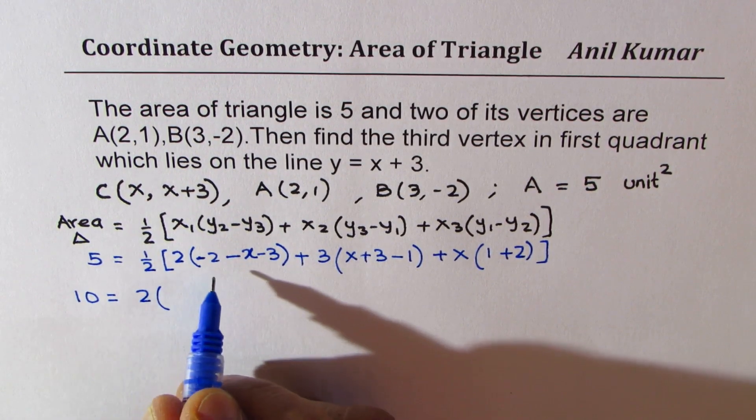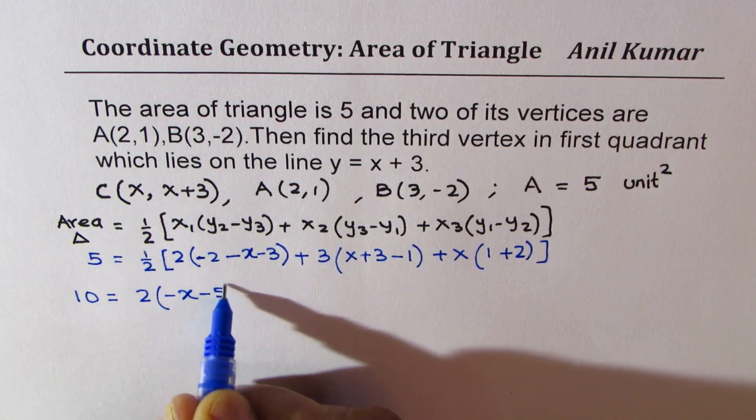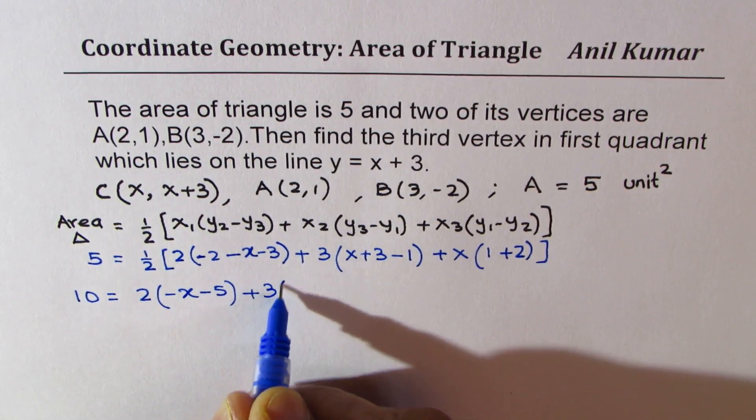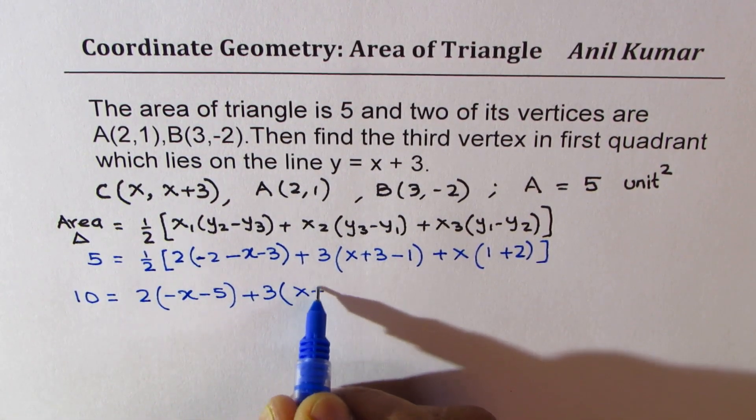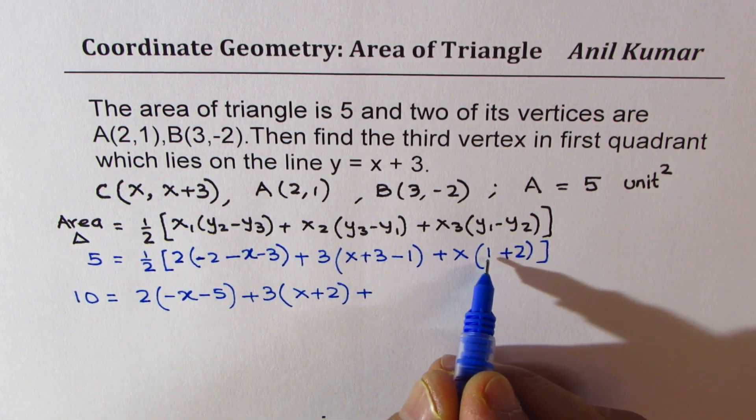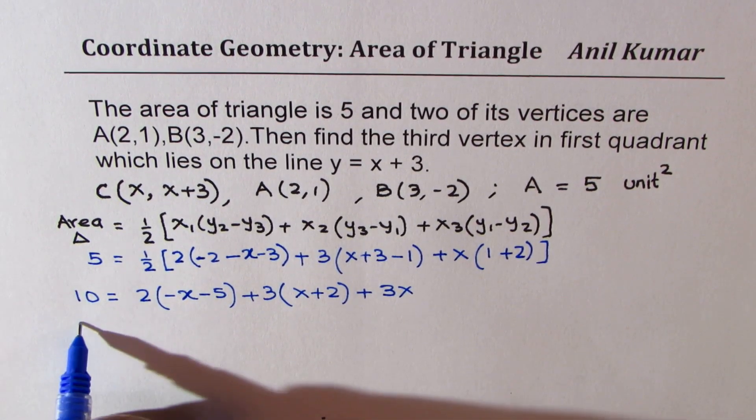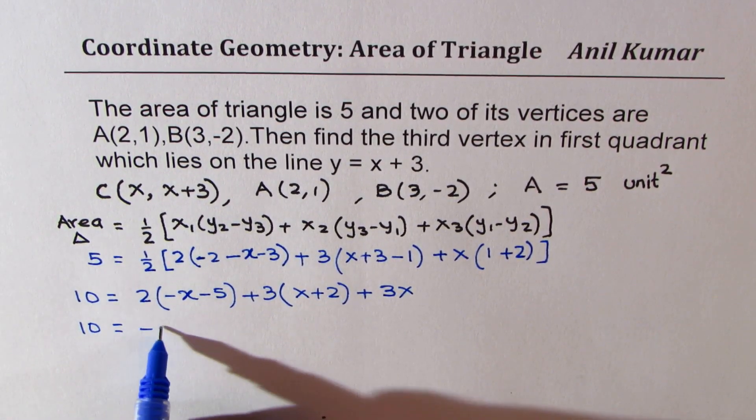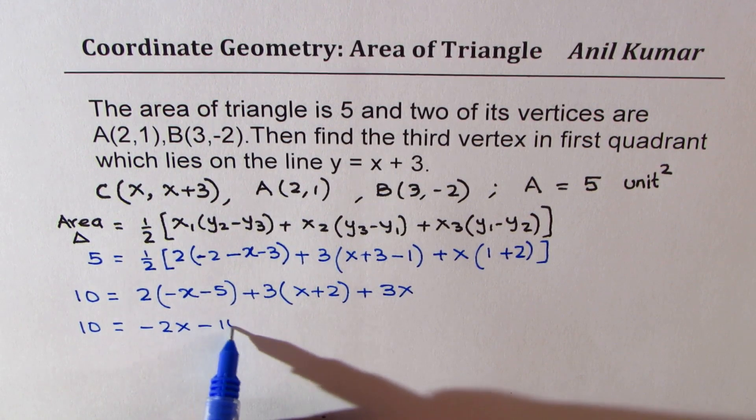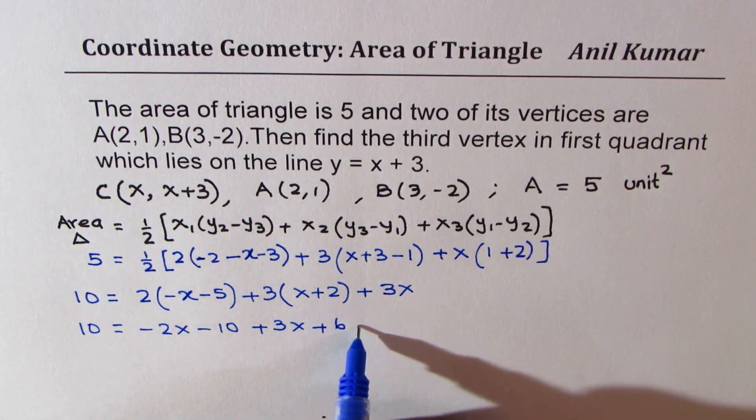Plus 3 times x + 2 plus x times 3. We could write this as 3x. Now open the bracket: -2x - 10 + 3x + 6 + 3x.